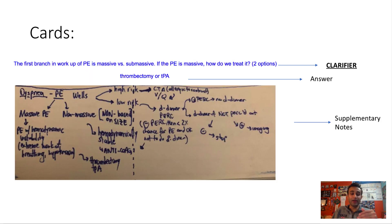You'll see that in this one, I said the first branch in the workup of a PE is massive versus submassive. If the PE is massive, how do you treat it? So now you're seeing that I'm actually adding a clarifier. The clarifier is going down the branch. I'm saying, if you have a massive PE in the emergency department, how do you treat it? The treatment is thrombectomy, which is an actual procedure, or you can use TPA. TPA, if I remember correctly, tissue plasminogen activator activates plasmin, which is a clot buster, and it's just a pharmacologic form.